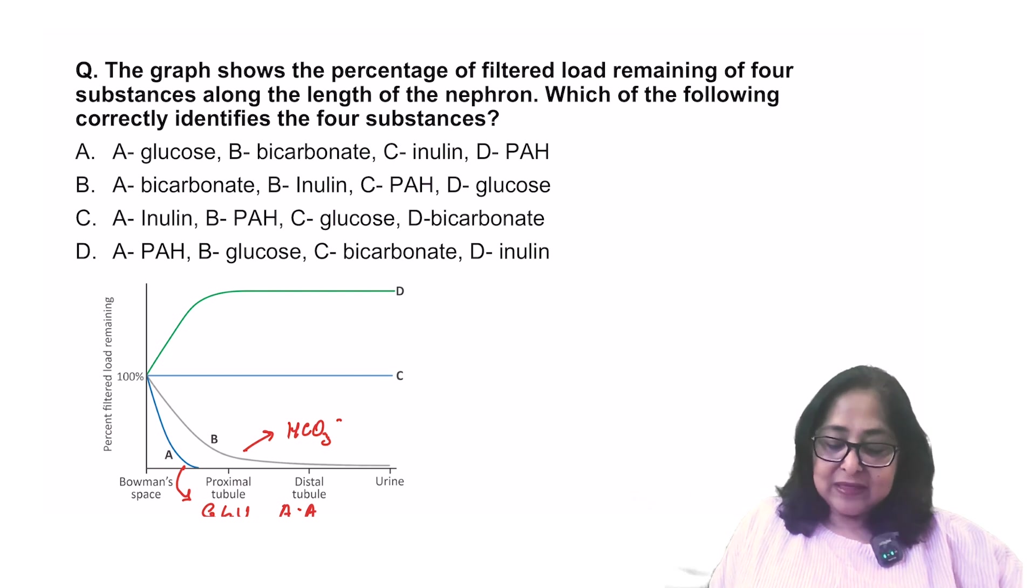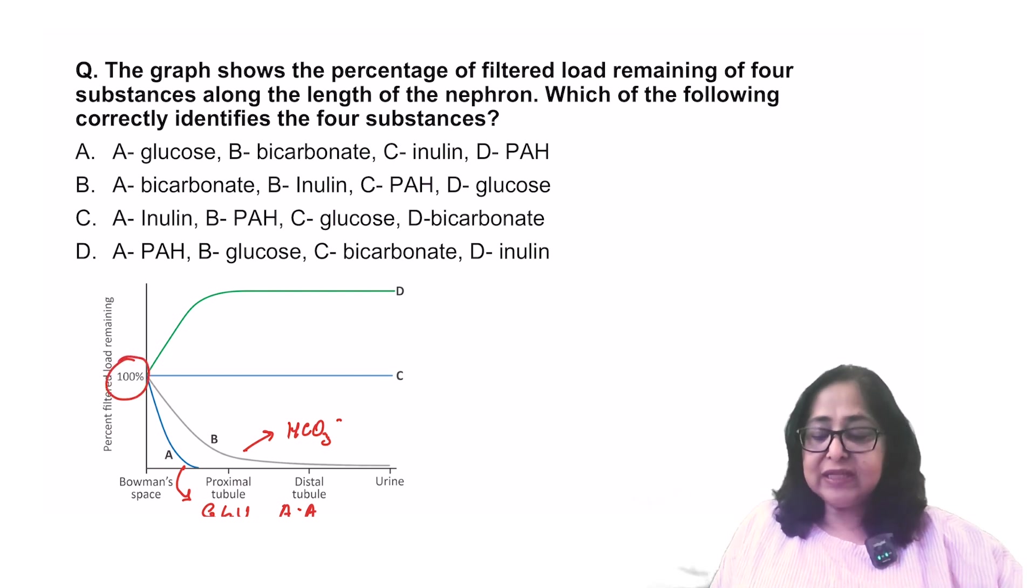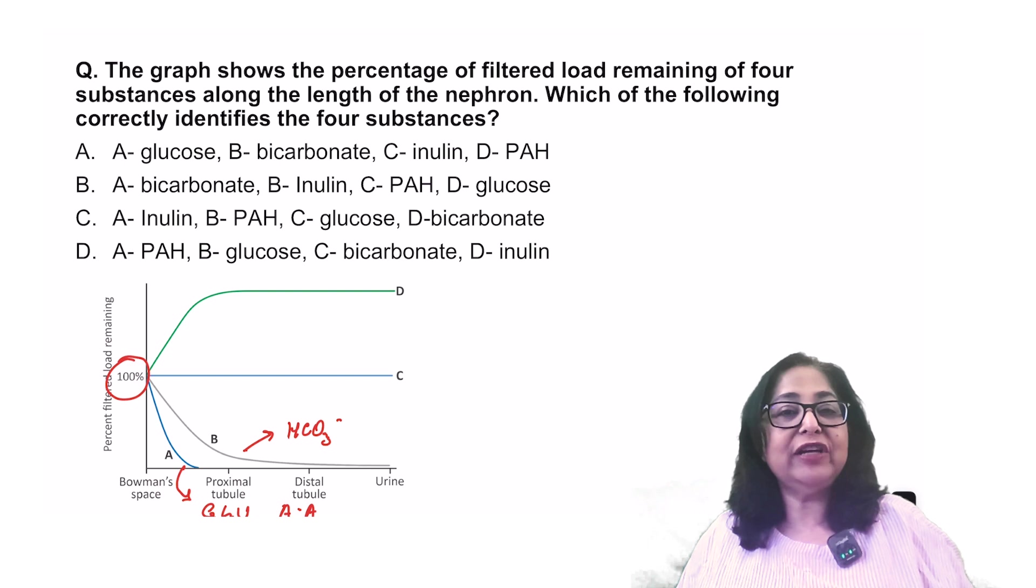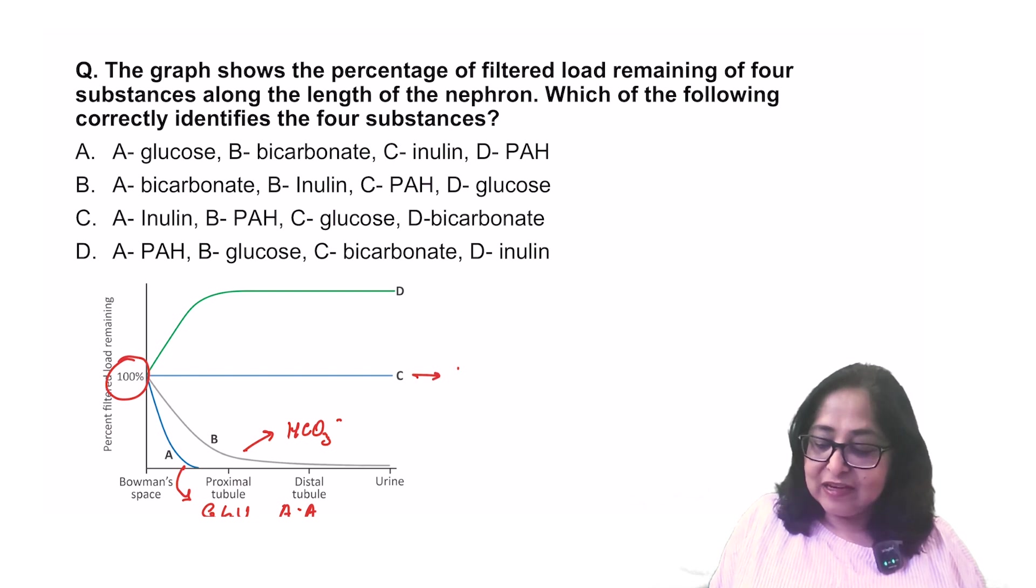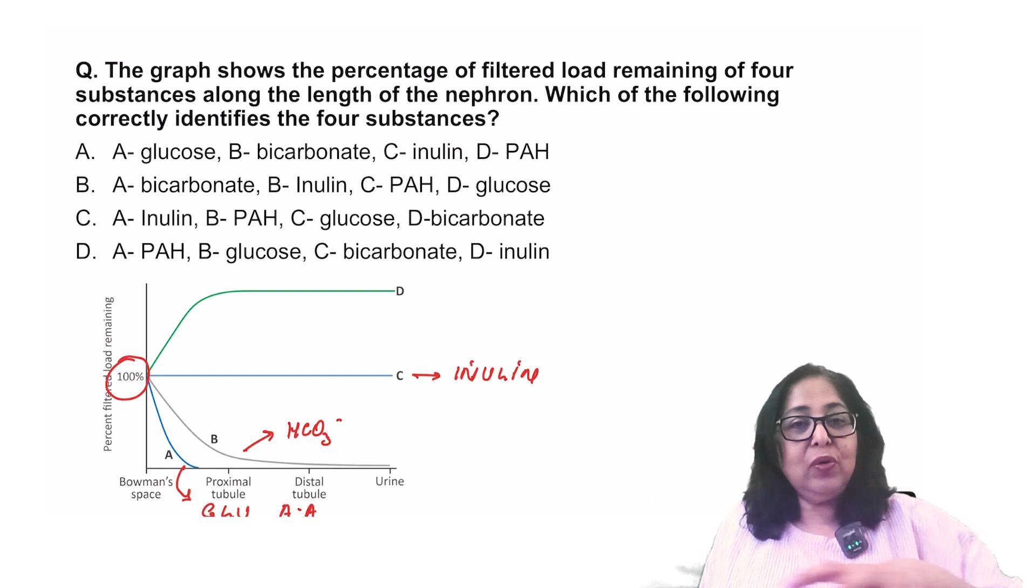Look at substance C. Now, this was 100% in the glomerular filtrate and continues to remain unchanged throughout the nephron. There is no reabsorption. There is no secretion. And this substance is inulin.